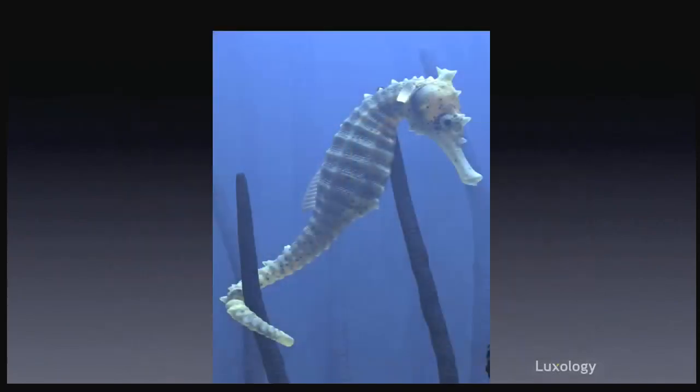Here you can see volumetric lights playing off of an object using subsurface scattering and image-based displacement. This is the subject of Andy Brown's seahorse tutorial, which is modeled, sculpted, UV mapped, painted, and rendered directly inside of Modo. And now you'll be able to apply beautiful volumetric effects as well.